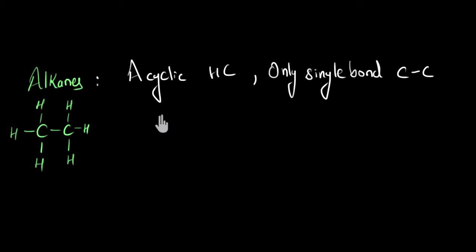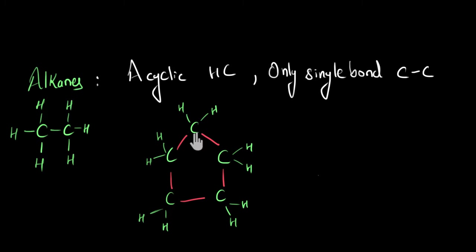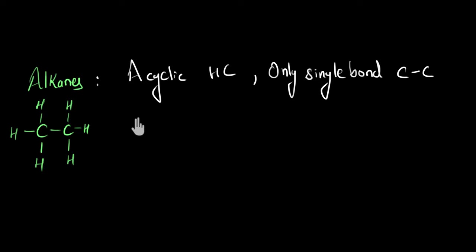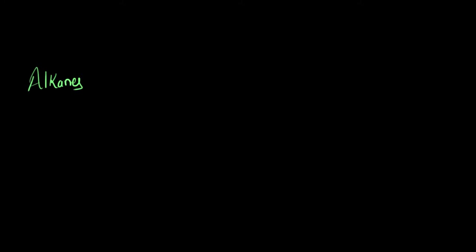Let's start with the alkane family. By definition, they are acyclic hydrocarbons — acyclic meaning that the carbon atoms are not arranged in a circular fashion. In a cyclic hydrocarbon, the carbon atoms are arranged in a circular manner. In alkanes, they won't be — they will be in an open chain structure. The second part is that they only have single bonds between the carbon atoms. All the carbon atoms will be connected with a single bond; no double or triple bond will be present between them.